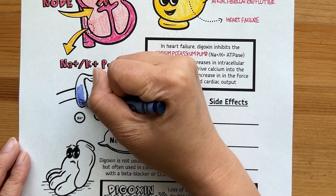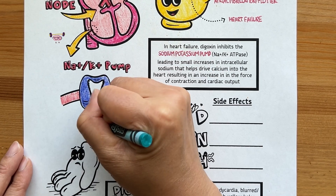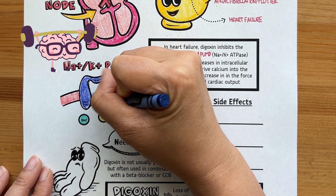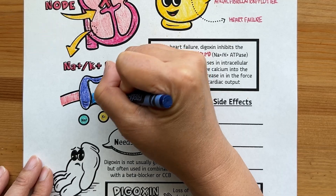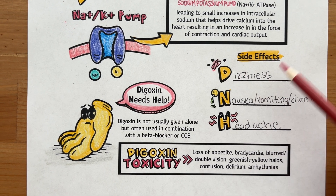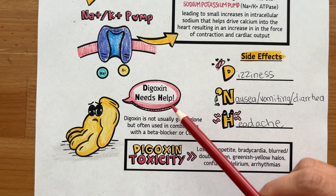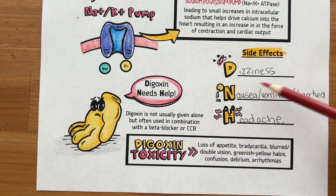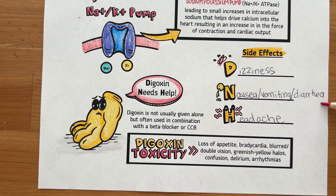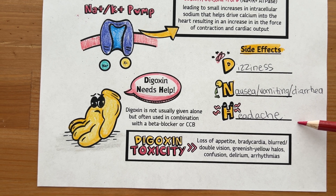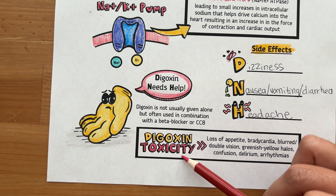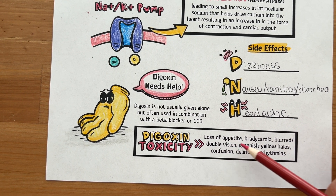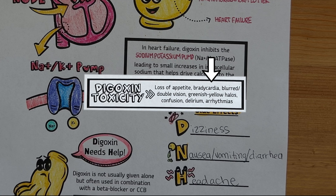For side effects, let's go back to our mnemonic DNH — Digoxin Needs Help — since it is not usually given alone, but often used in combination with a beta blocker or calcium channel blocker. D stands for dizziness, N stands for nausea and/or vomiting, H stands for headache. In cases of digoxin toxicity, the side effects are even more severe and potentially fatal, including loss of appetite, bradycardia, blurred and/or double vision, greenish-yellow halos, confusion, delirium, and arrhythmias.